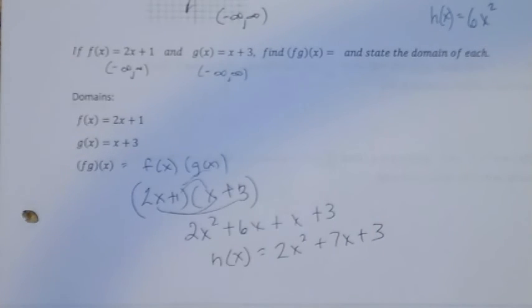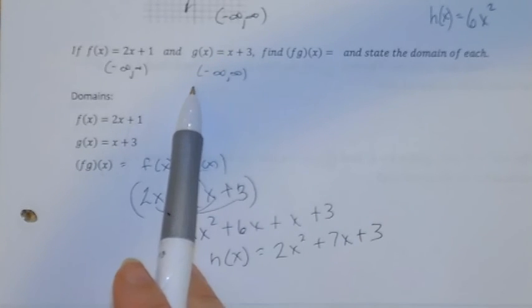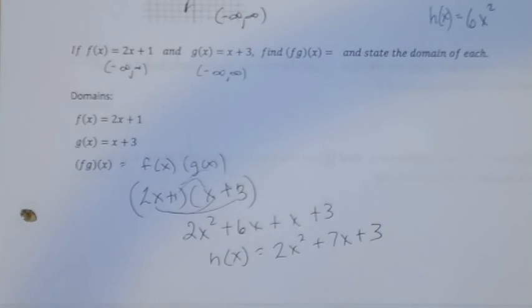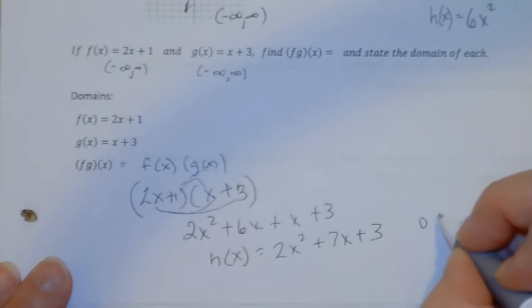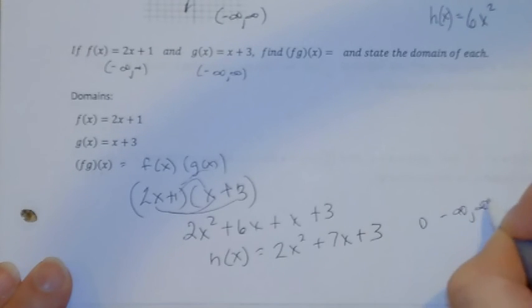The same as addition and subtraction, whatever places these intersect is going to be the same for your new domain. So our new domain on this one is going to be negative infinity to infinity.